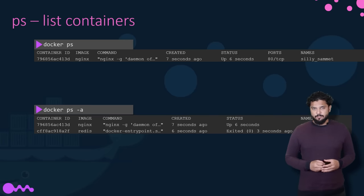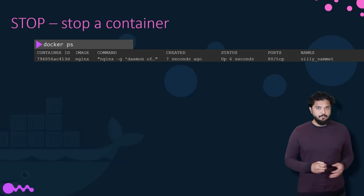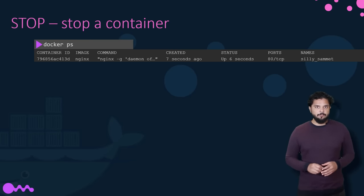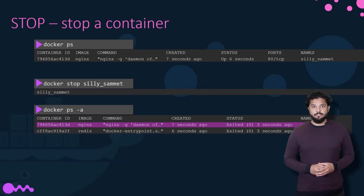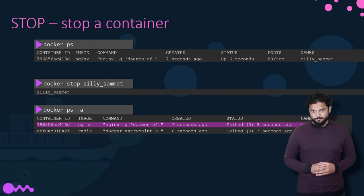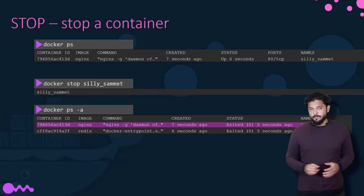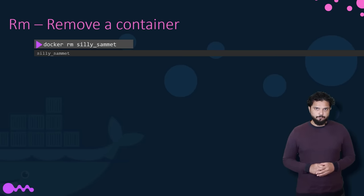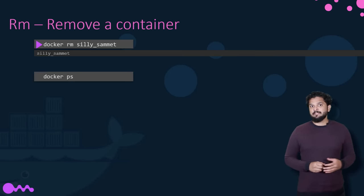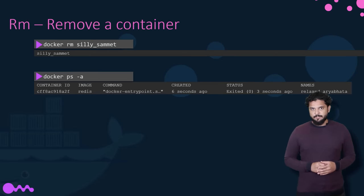To stop a running container, use the Docker stop command, providing either the container ID or the container name. If you're not sure of the name, run the Docker ps command to get it. On success, you will see the name printed out. Running Docker ps again will show no running containers. Running Docker ps -a, however, shows the container in an exited state. If we don't want this container lying around consuming space, use the Docker rm command to remove a stopped or exited container permanently. Run the Docker ps command again to verify that it's no longer present.